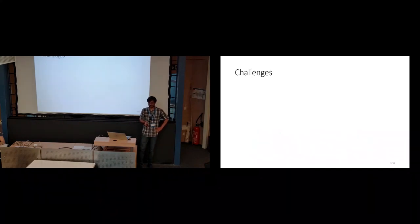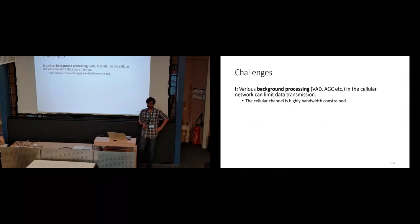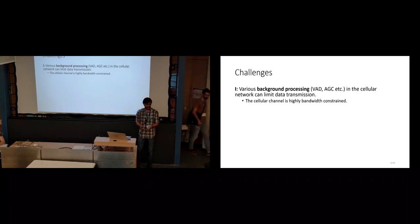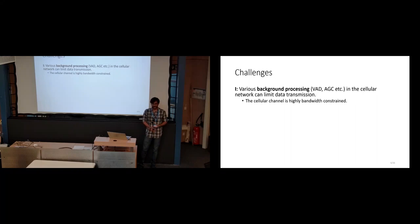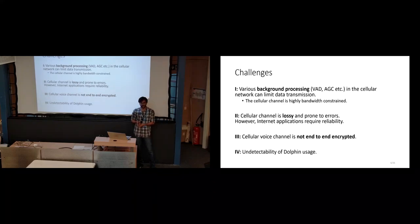But to build the system, there were significant technical challenges. The first challenge was that in the cellular voice channel, there is a lot of background processing that happens in the form of automatic gain control, voice activity detection, which really limits the data rate in these channels. Also, the cellular channel is by default very highly bandwidth constrained because it's made for voice data and not for sending data bits. On top of that, the cellular channel is lossy. For accessing internet applications, we need some form of reliability. The channel is not end-to-end encrypted, which we also need to provide. And lastly, we need to ensure that it should not be very trivial to detect if such a system is being used.